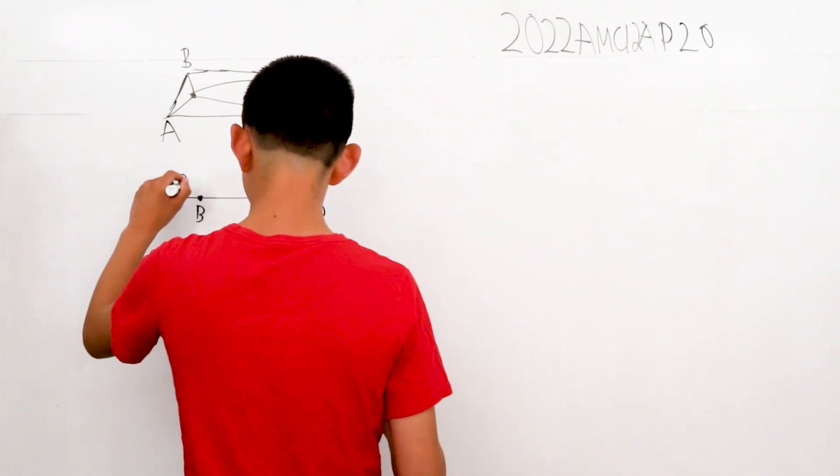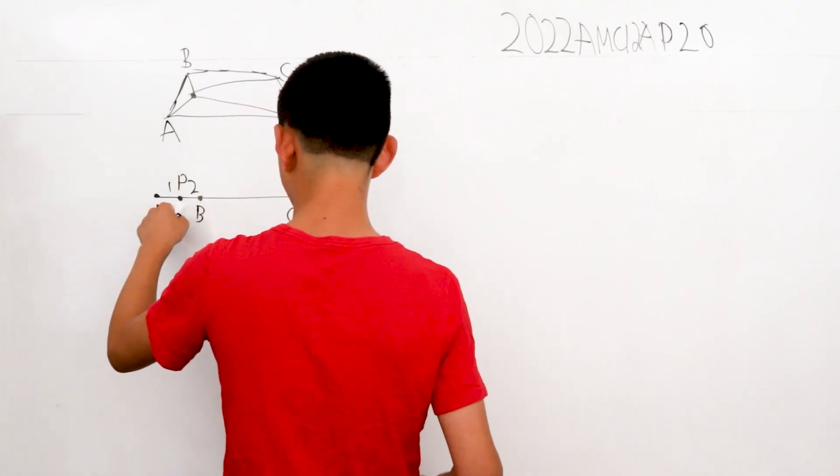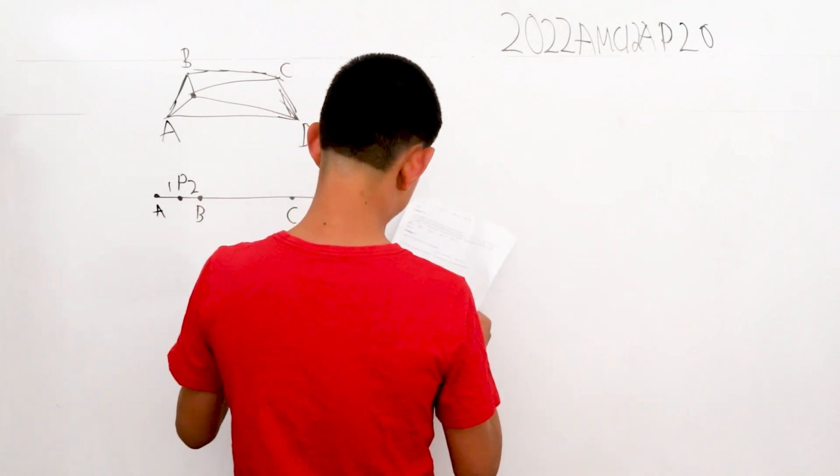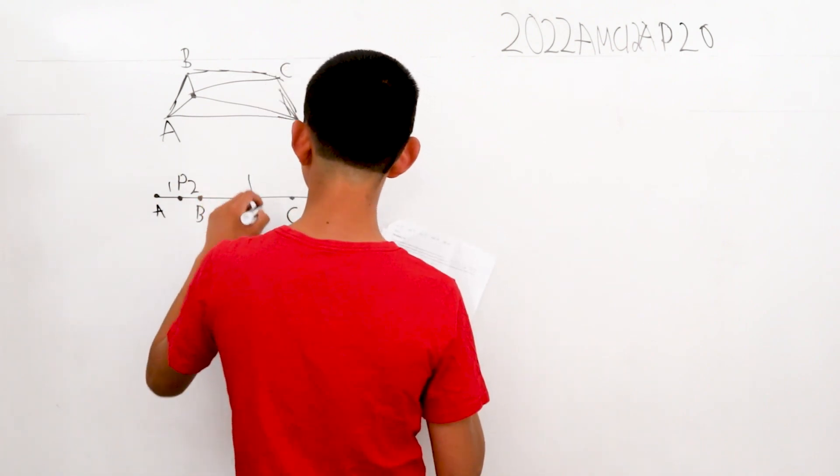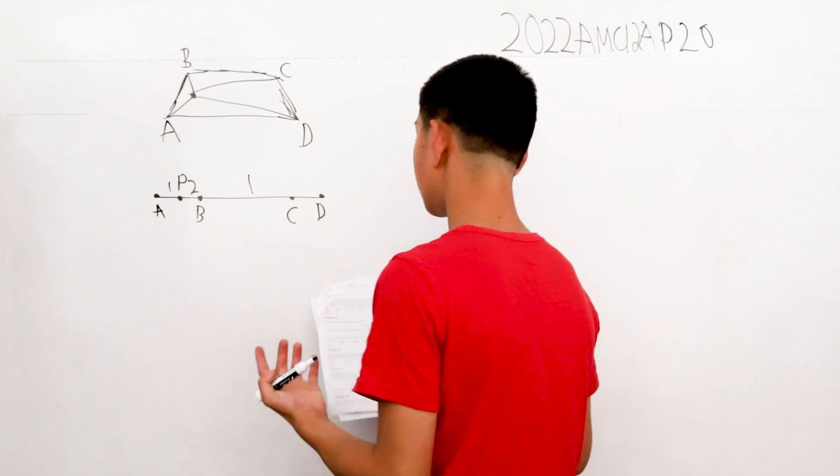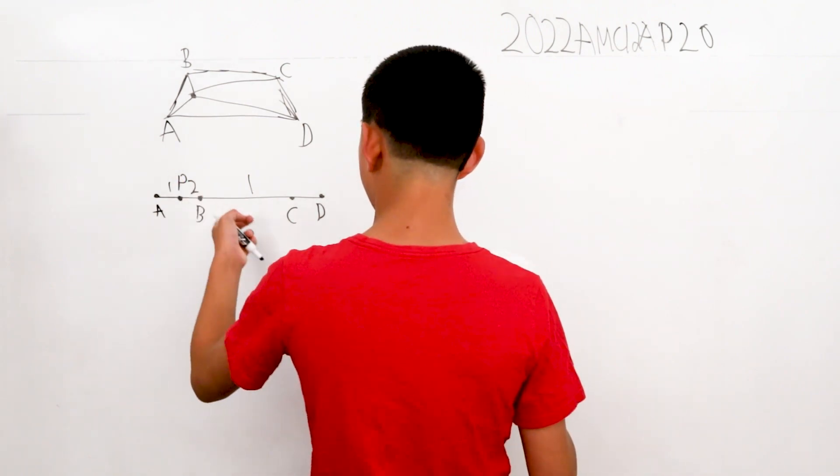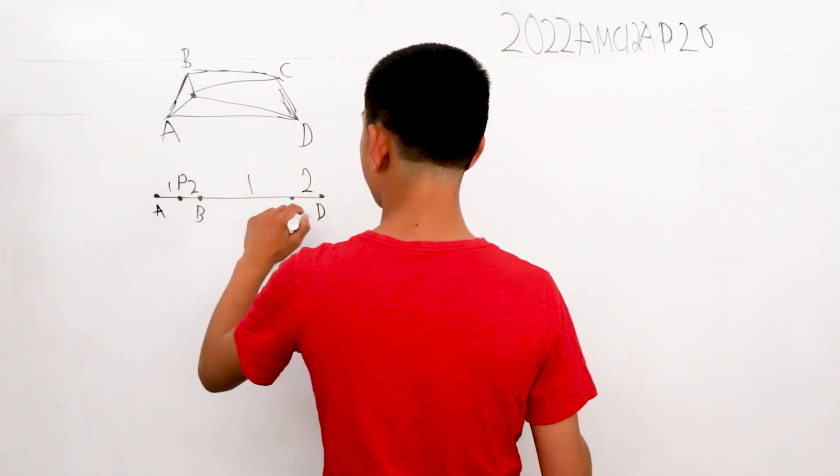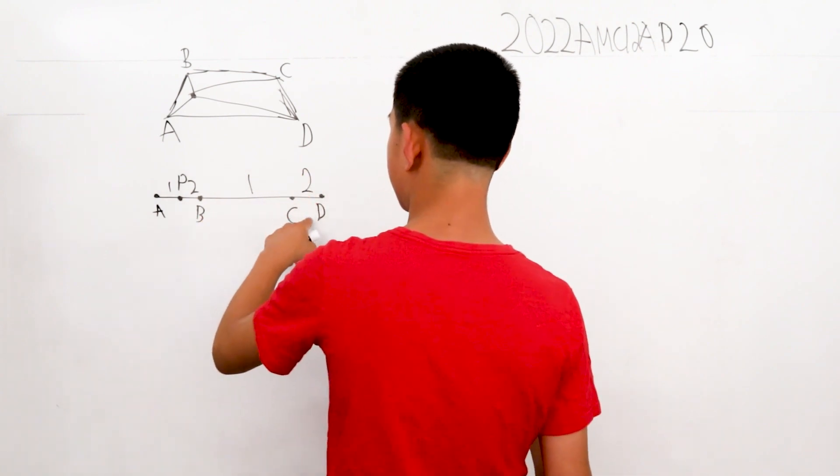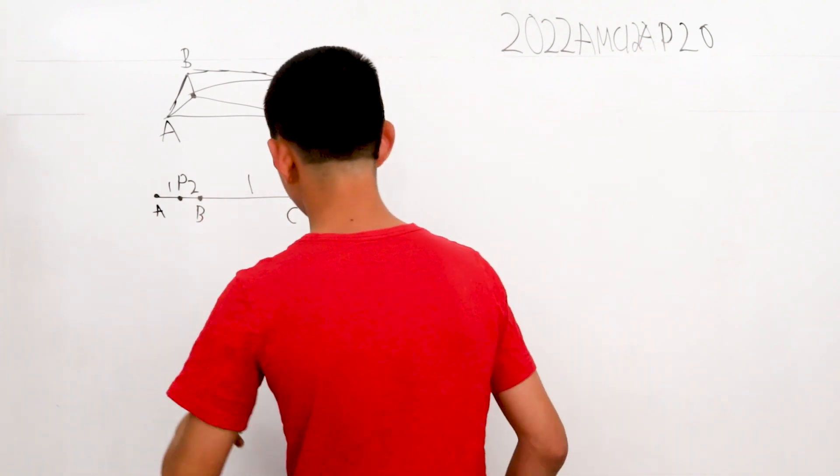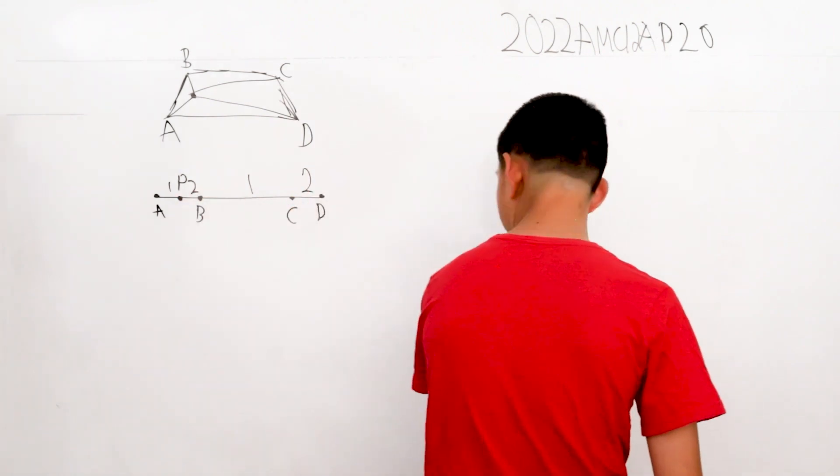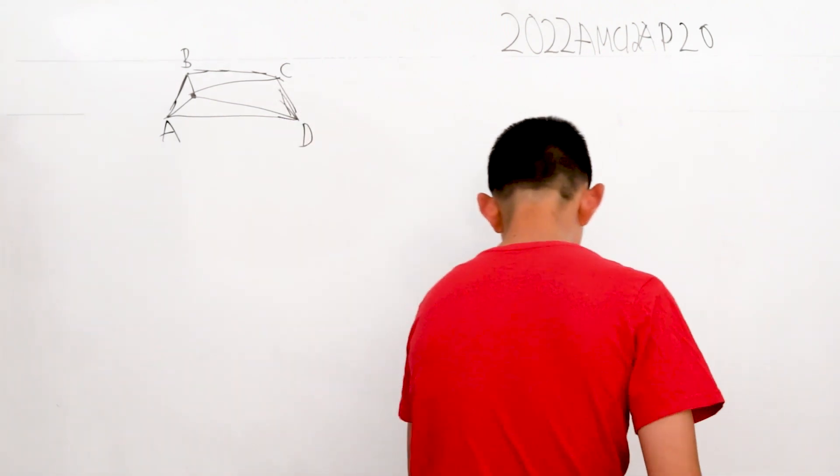It says PA is 1, PB is 2, that means it's got to be here. But PC is 3, this means this has got to be 1. And PD is 4, this has got to be 2. But it shows that CD and AB are equal, but 2 is not equal to 3. This does not work.